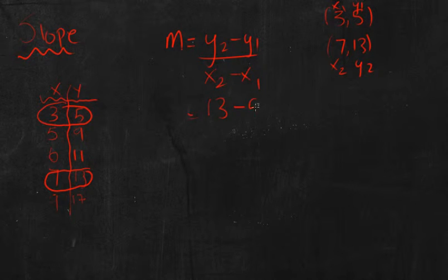So 13 minus five all over seven minus three. So 13 minus five is eight. Seven minus three is four. And that gives us a slope of two.